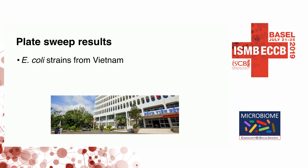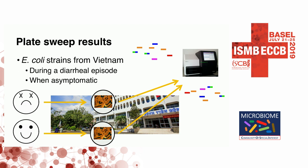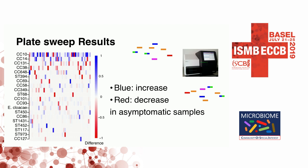We moved to applying this to real data. We got plate sweeps from Vietnamese children who came to a hospital with diarrhea, sequenced during the diarrheal episode and again when they were asymptomatic. We got these paired samples from each child, cultured for E. coli, to see what the E. coli population structure looks like at these two time points.